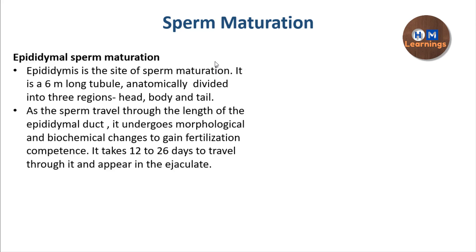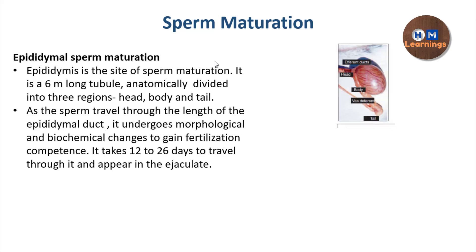Now we can talk about epididymal sperm maturation happening in the epididymis. The epididymis is a 6-meter-long coiled tube present on the posterior aspect of the testes, and it is anatomically divided into three regions. You can see in this diagram: the round structure is the testes, and the epididymis is present posteriorly. It has a head, body, and tail, which then drains into the vas deferens. As the sperm travels through this entire 6-meter length, it undergoes the process of sperm maturation.